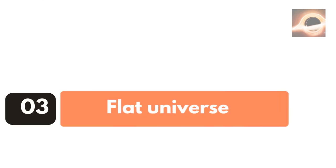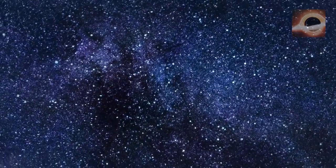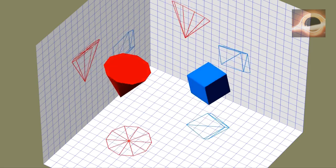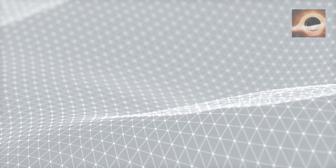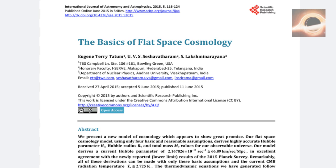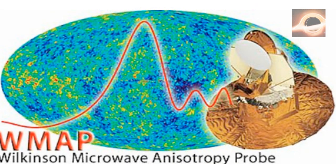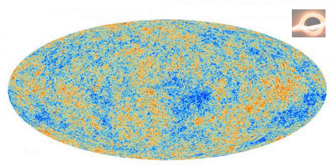And finally, flat universe, like a sheet of paper or a very lazy pizza. This one means the universe extends forever in all directions, and its geometry follows the familiar rules of Euclid, which means parallel lines will remain parallel forever. This is the one most supported by modern data. In particular, the Wilkinson Microwave Anisotropy Probe and Planck satellite missions, led by scientists like Charles Bennett and George F. Smoot, gave us precise measurements of the cosmic microwave background.